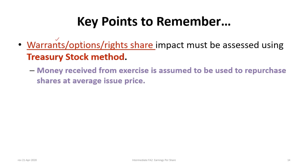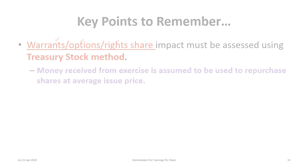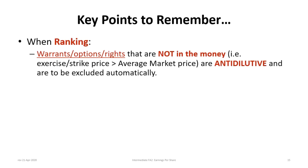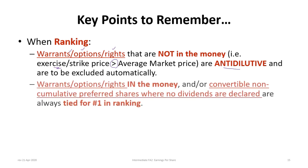For warrants, options, or rights, share impacts must be calculated using the treasury stock method: all money received from the exercise is assumed to be used to repurchase shares at the average market price, resulting in a net diluted share amount. For ranking, any warrants, rights, or options where the exercise price exceeds the average market price are anti-dilutive and should be excluded.